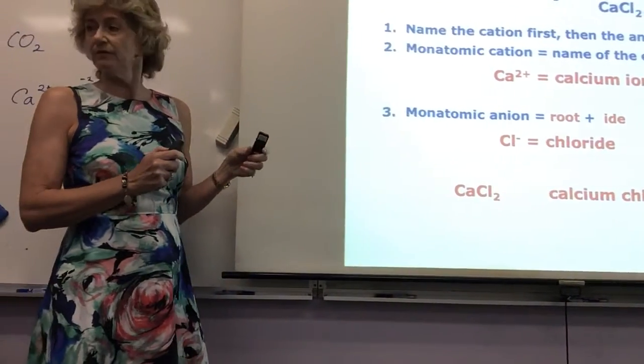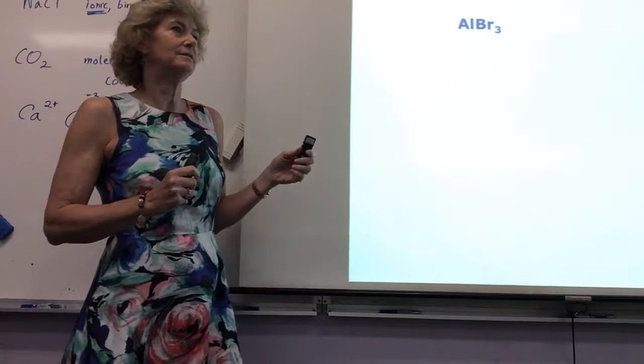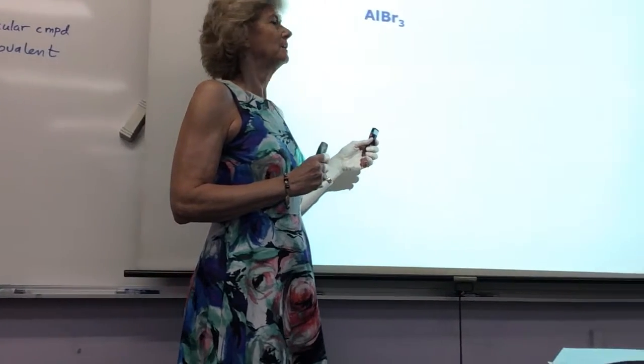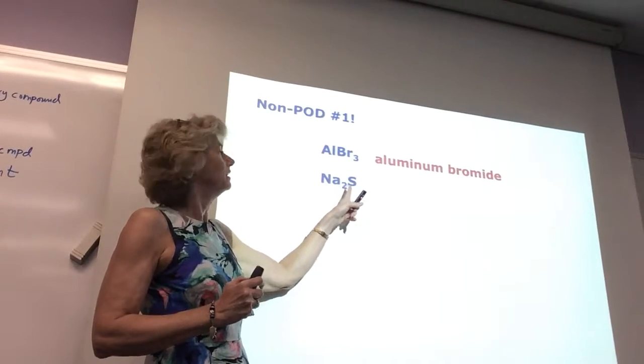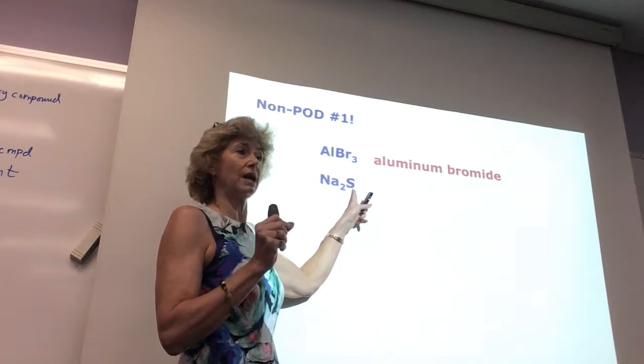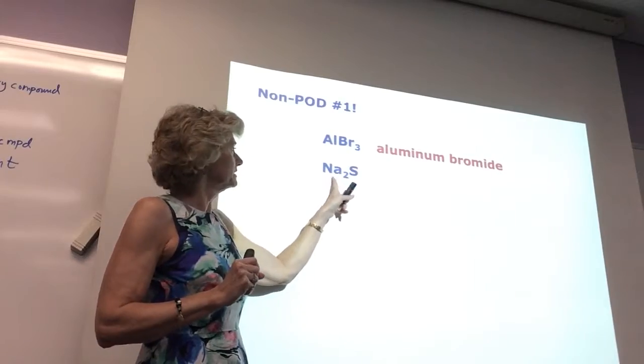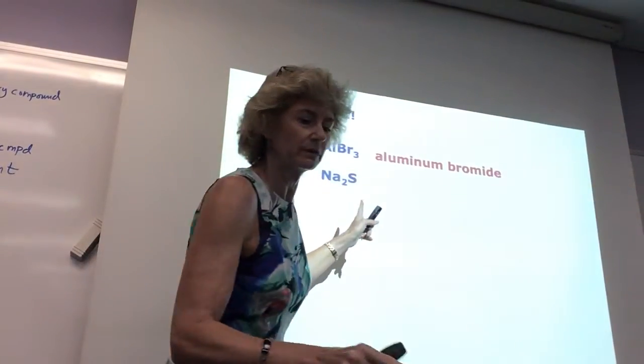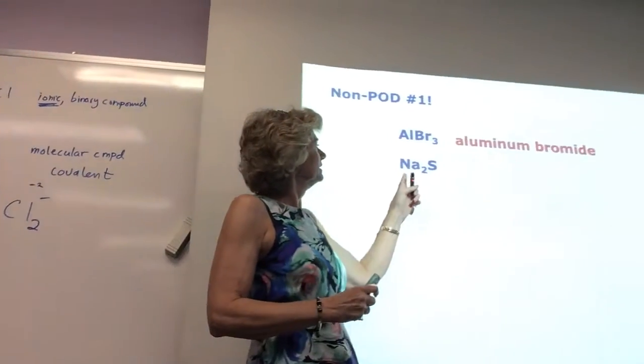So, shall we do a few of these? Ready? What's this? Aluminum bromide. Sodium sulfide, not sulfate. Sulfate, the eights have oxygen. So how do we know this is sodium? Well, look right there. We already know sodium chloride, so we knew this was a sodium ion.